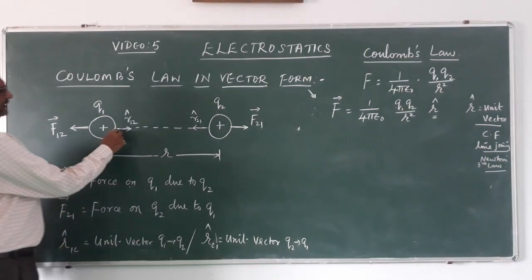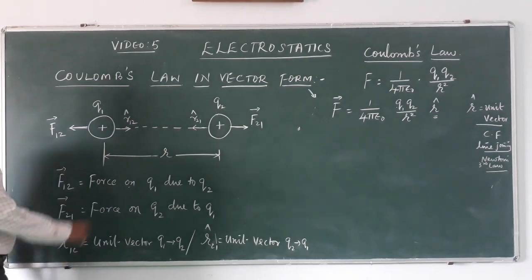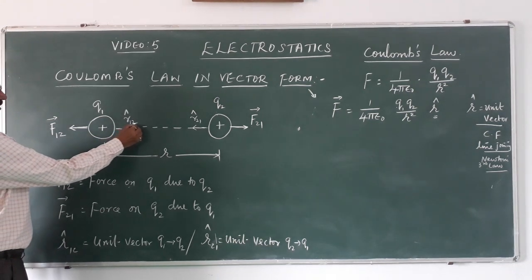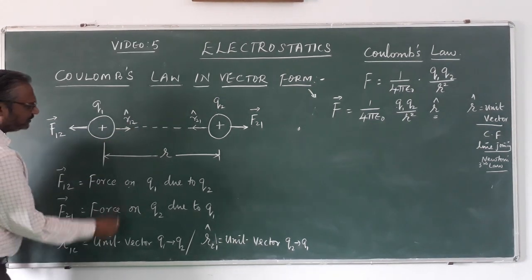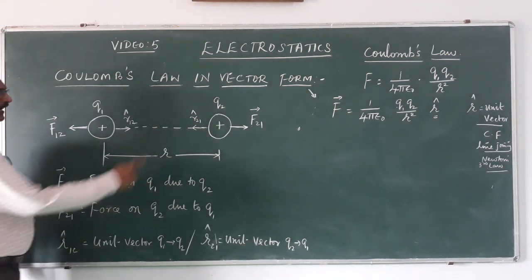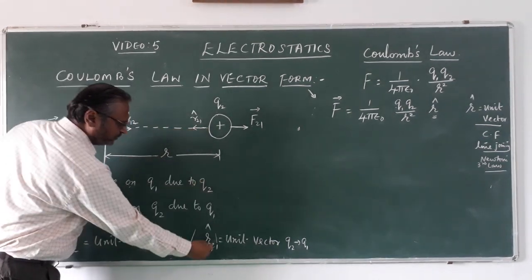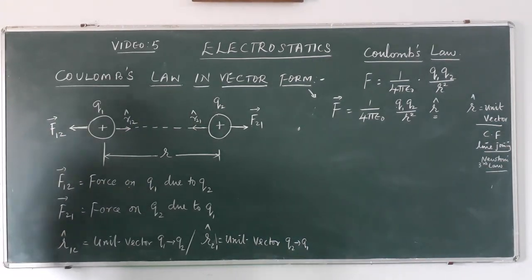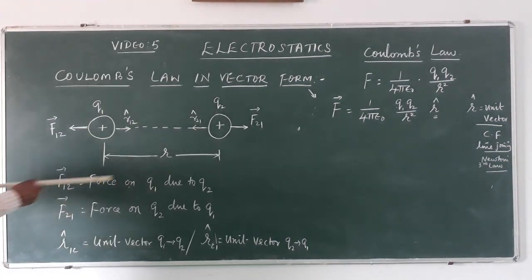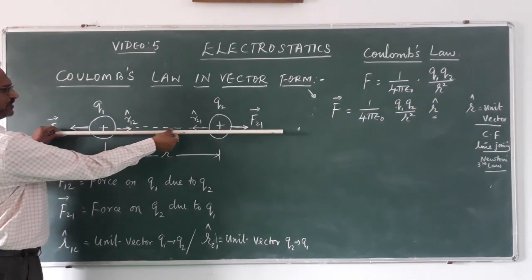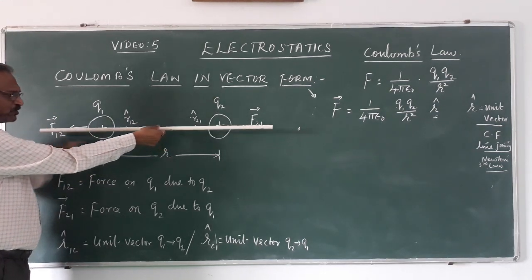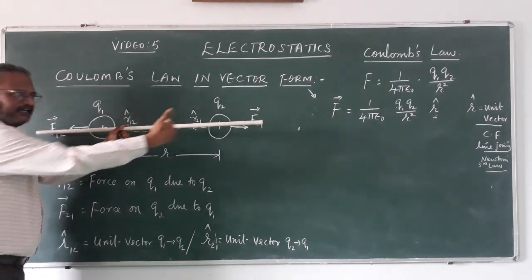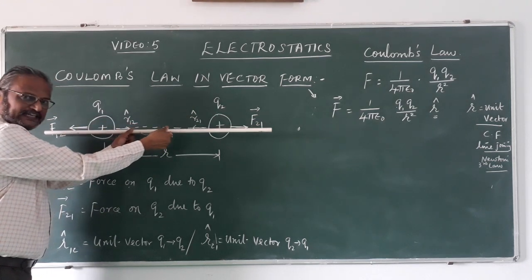And the line of action is same. So r̂₁₂ is the unit vector from q₁ to q₂, and r̂₂₁ is the unit vector from q₂ to q₁. So they are pointing, you just think very carefully, the line of action of the two forces F₁ and F₂ are same.